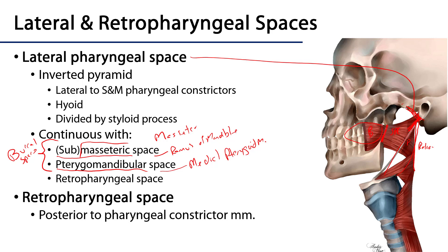We can have the movement of materials from the face — infraorbital space, buccal space — posteriorly back into the submasseteric and trigomandibular spaces, which are contiguous with the lateral pharyngeal space, which is contiguous with the retropharyngeal space. So this is a pathway through which materials may move.